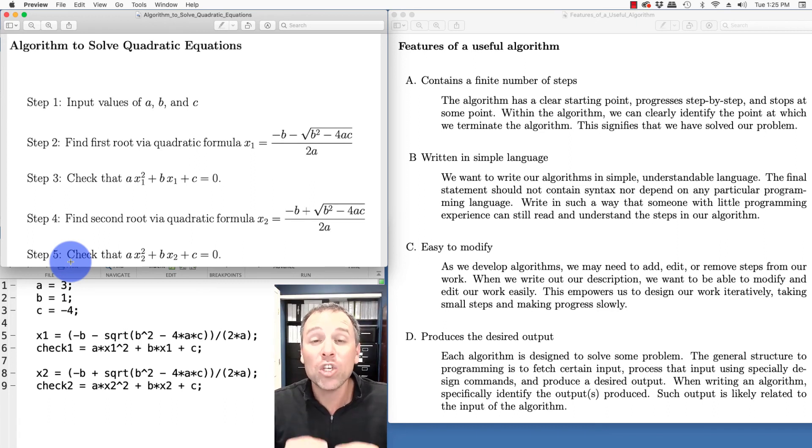Quick recap, when we're trying to write a useful algorithm, we want four major features. First, we want to do so in a finite number of steps. Second, we want to write it in plain English so that it's easily understandable without reference to specific syntax. Third, we want to write it in such a way that it's easy to modify. And fourth, we want to identify the outputs produced and how those relate to the input given the code that we've written.